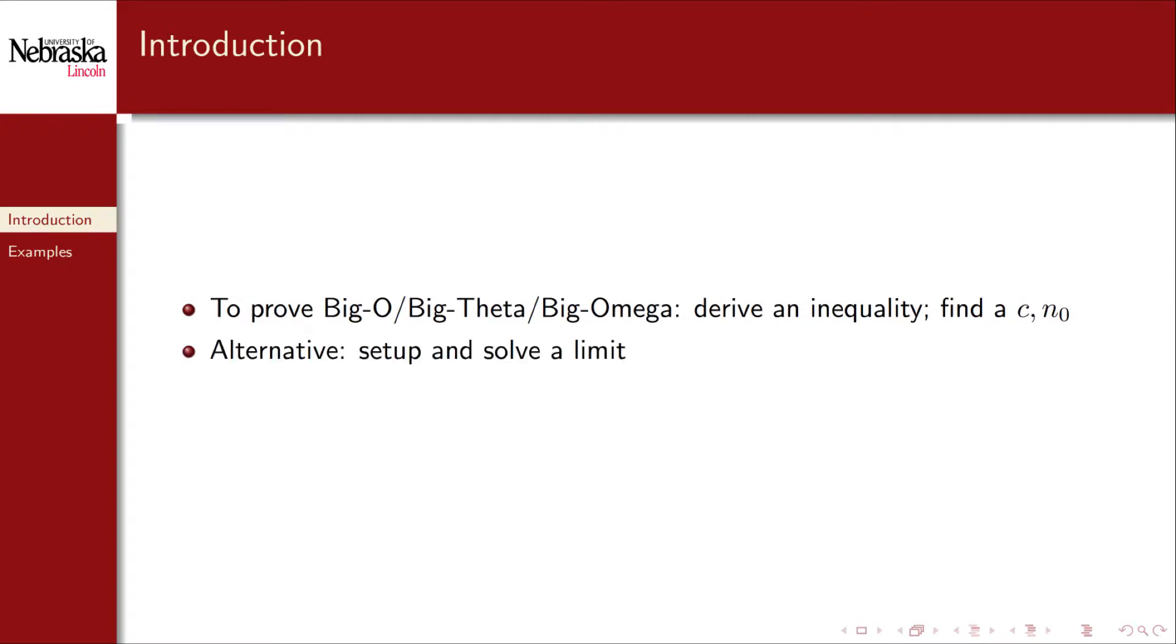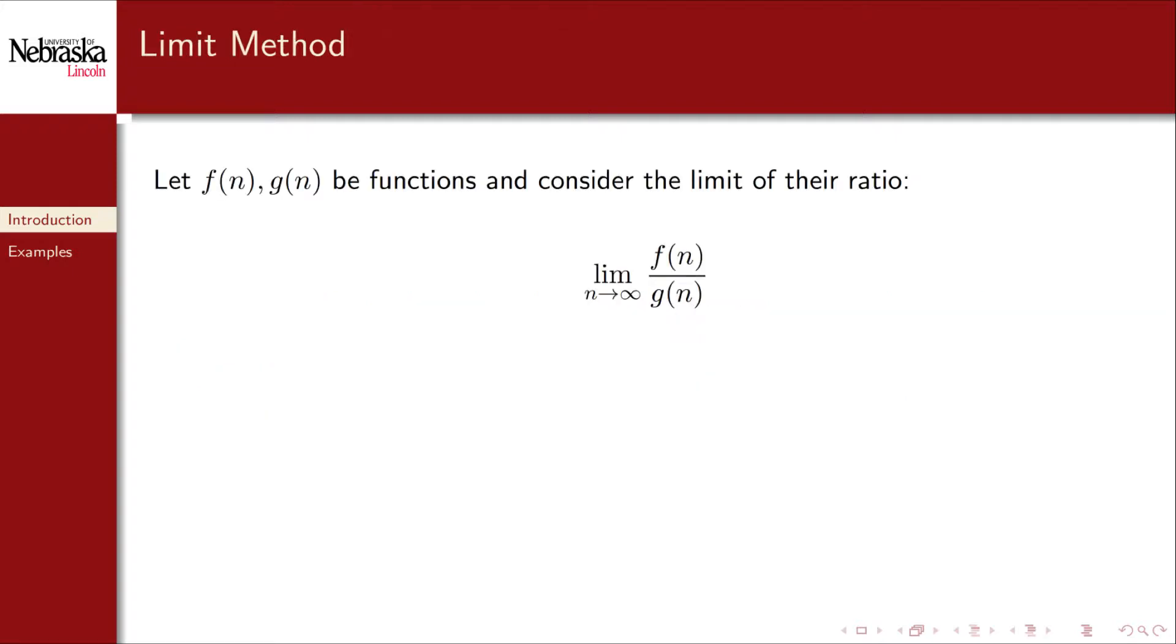An alternative proof technique is to set up and solve a limit. In general this method is much easier but requires some basic calc knowledge. To demonstrate the idea consider two functions f(n) and g(n). We set up a limit of the ratio of these two functions. In general these will be functions that are a product of algorithm analysis, so we will assume that they are monotone and non-decreasing functions.